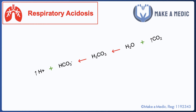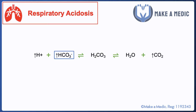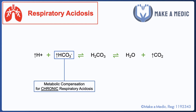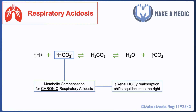However, there are many conditions in which patients retain carbon dioxide chronically, such as COPD and interstitial lung disease. If the patient is retaining carbon dioxide over a long period of time, the kidneys will eventually detect this and recognise that the blood has become persistently acidotic, and will try to reabsorb more bicarbonate to increase the serum bicarbonate concentration and balance the equation. This is described as metabolic compensation for chronic respiratory acidosis.